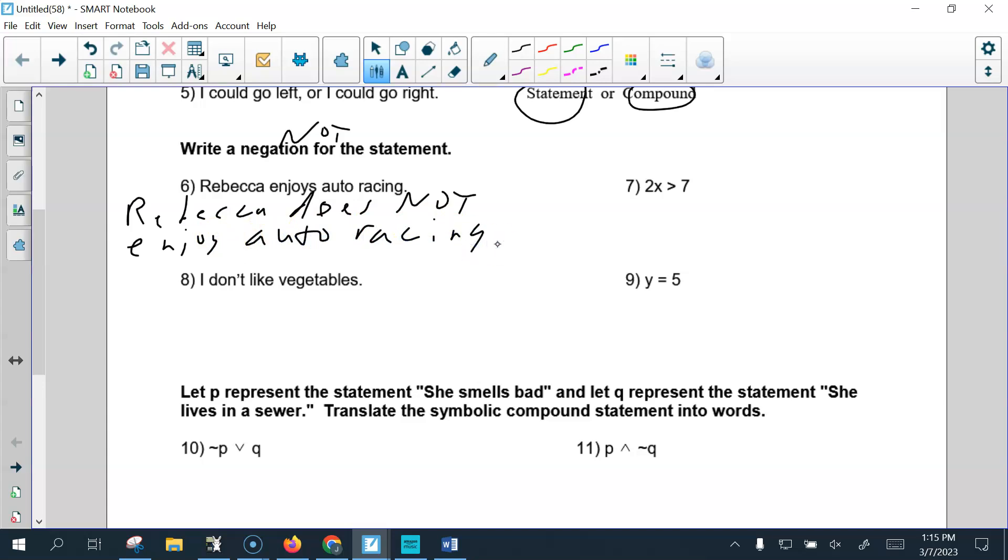2x is greater than 7. Remember, this is a little tricky. We still say the 2x. We still say 7. Opposite direction, but it should be opposite direction and equal. So 2x is less than or equal to 7. Because this is saying greater. That means the opposite would be including the number 7 or less.